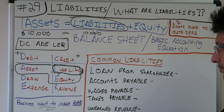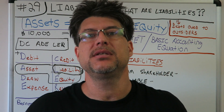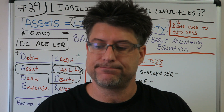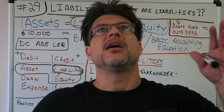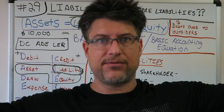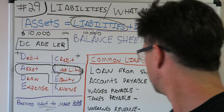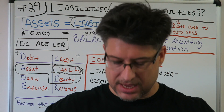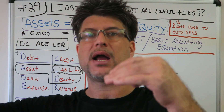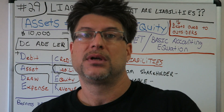Here's kind of a hack for liabilities: if you see the word 'payable' somewhere on your exam or homework, that means you owe it — accounts payable, wages payable, taxes payable — anything payable means I owe it to you, I am liable for it. Payable is a debt owed to outsiders, so if you see a payable, it's a liability.